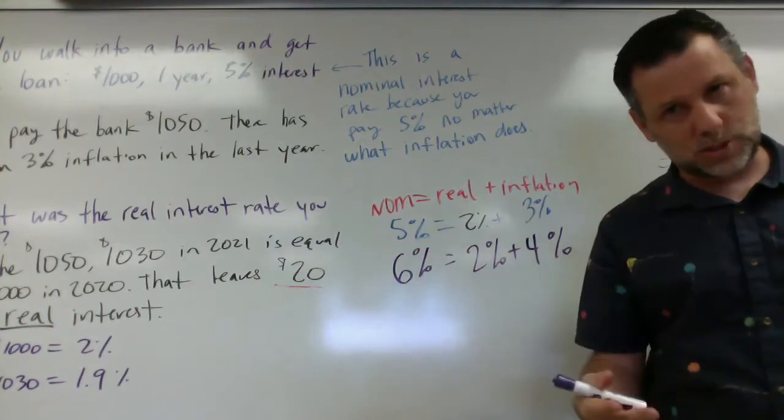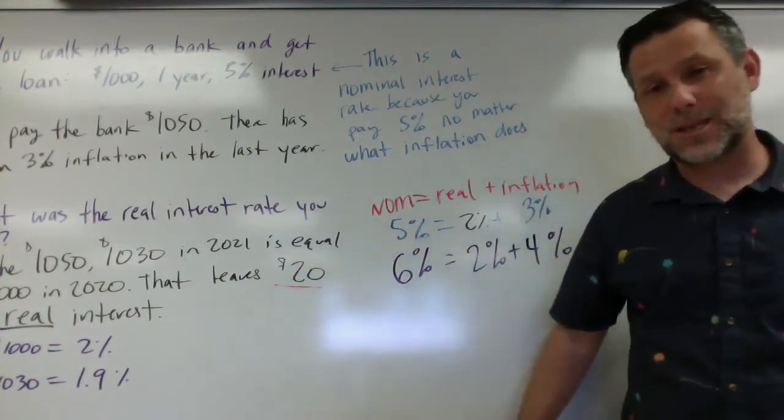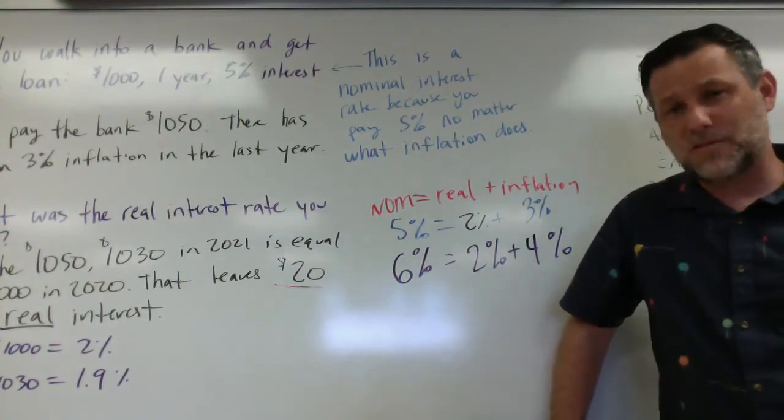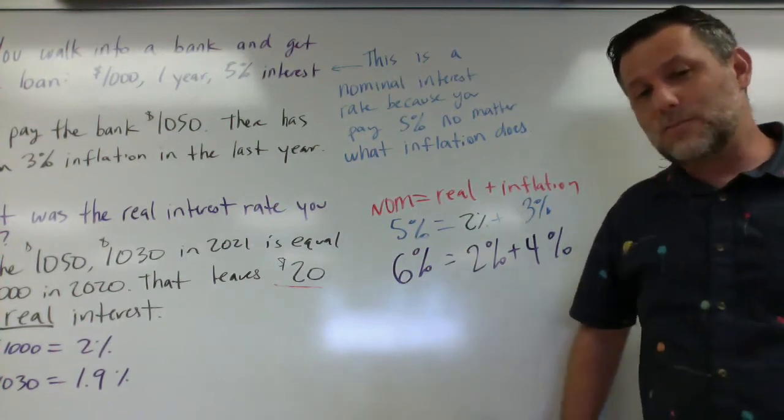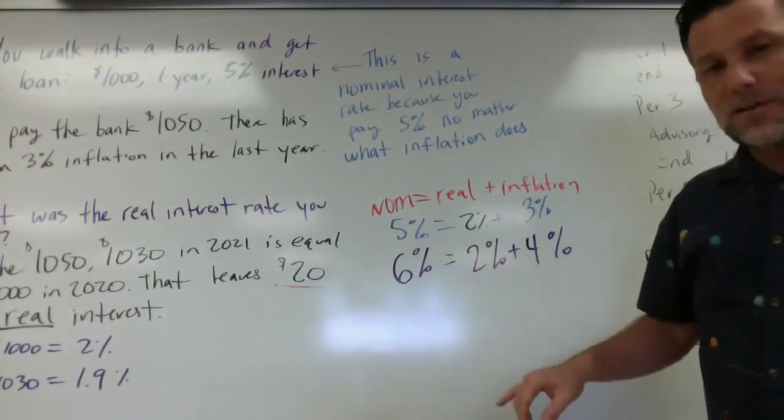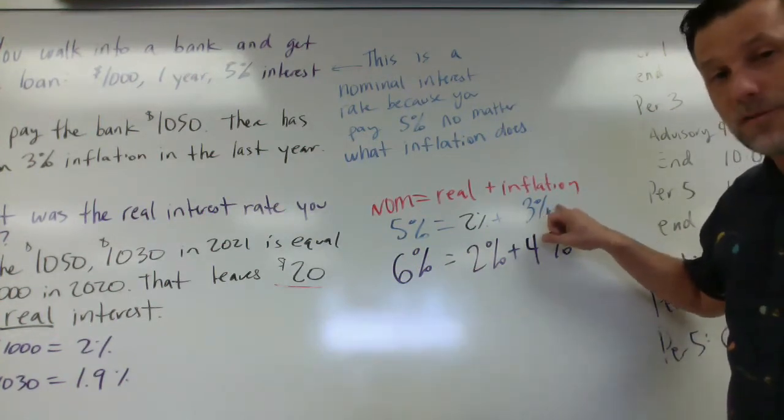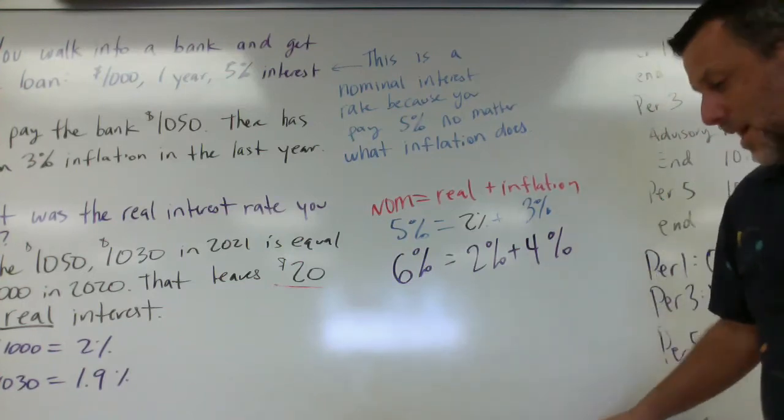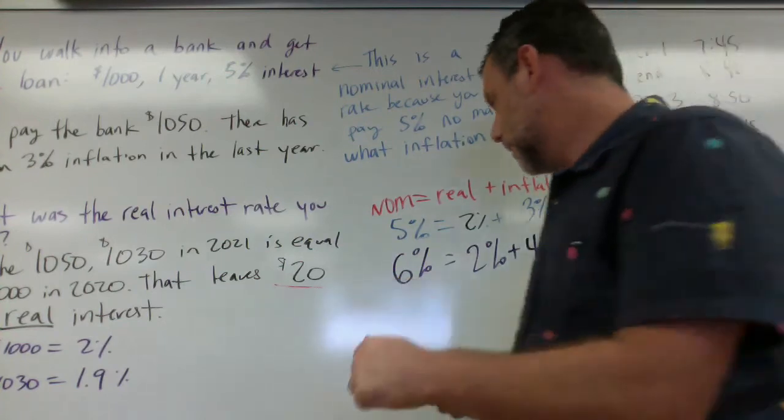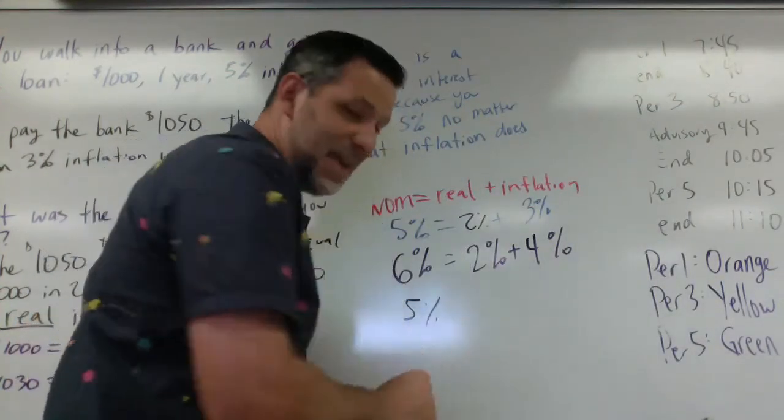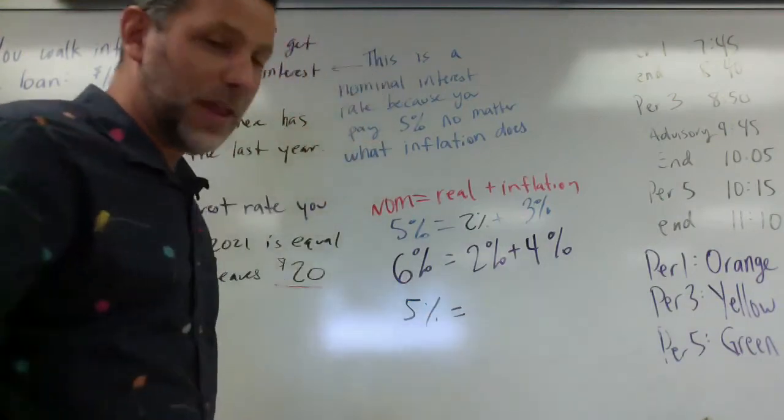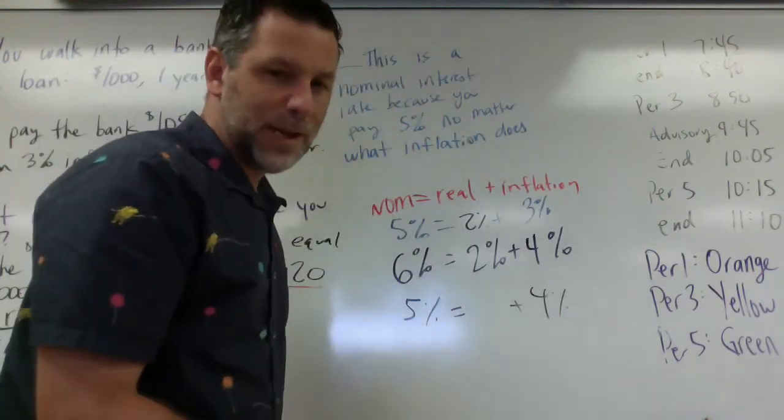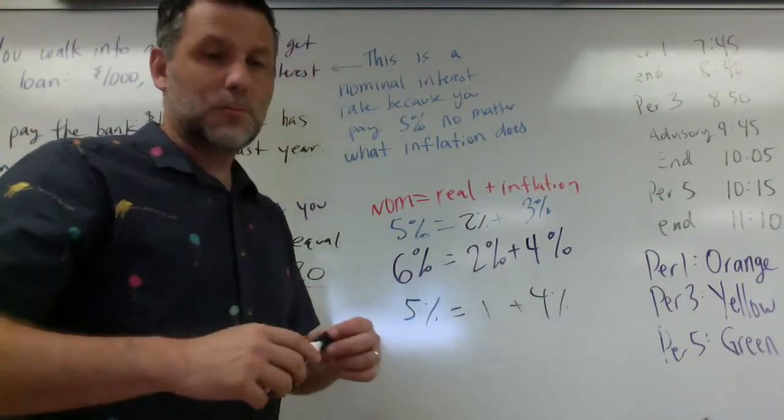But what about our original loan? The bank can't go back and change that unless I agree to it ahead of time. And for most AP econ questions, you're going to be assumed a fixed interest rate that doesn't change. So if it was a fixed interest rate that couldn't change, and if the bank was anticipating 3% inflation, but it turned out to be 4%, what does that mean? Well, what that means is my nominal interest rate, if it's locked in at 5%, it stays at 5%. If the inflation rate goes to 4%, that means my real has to go down to 1%.